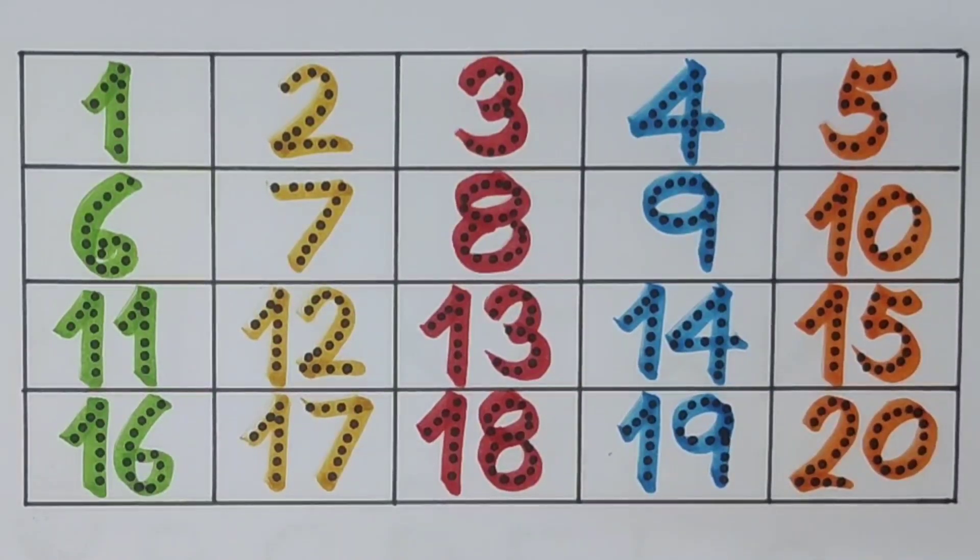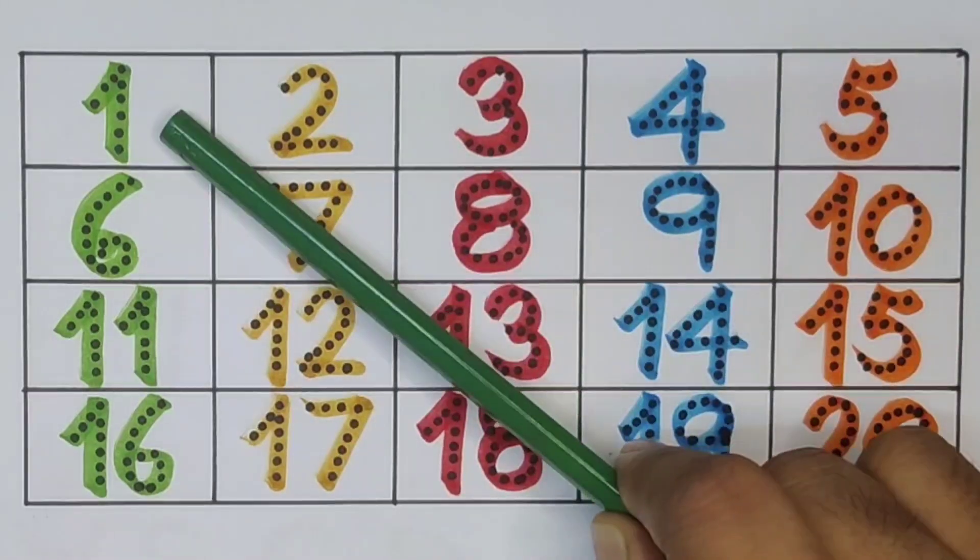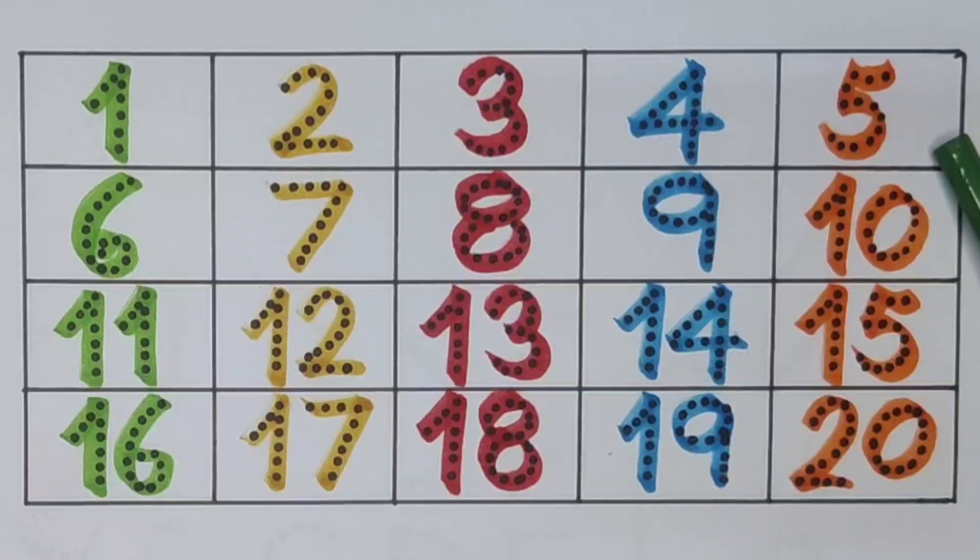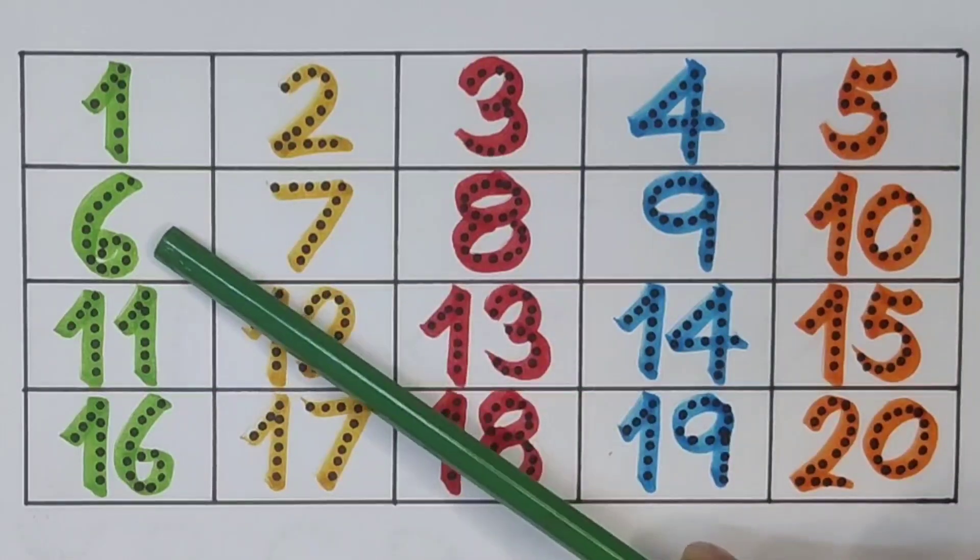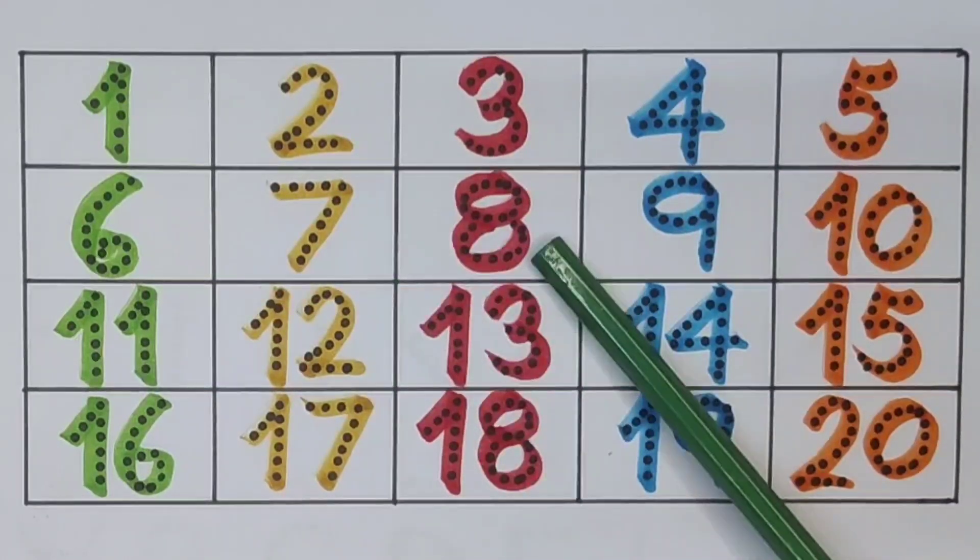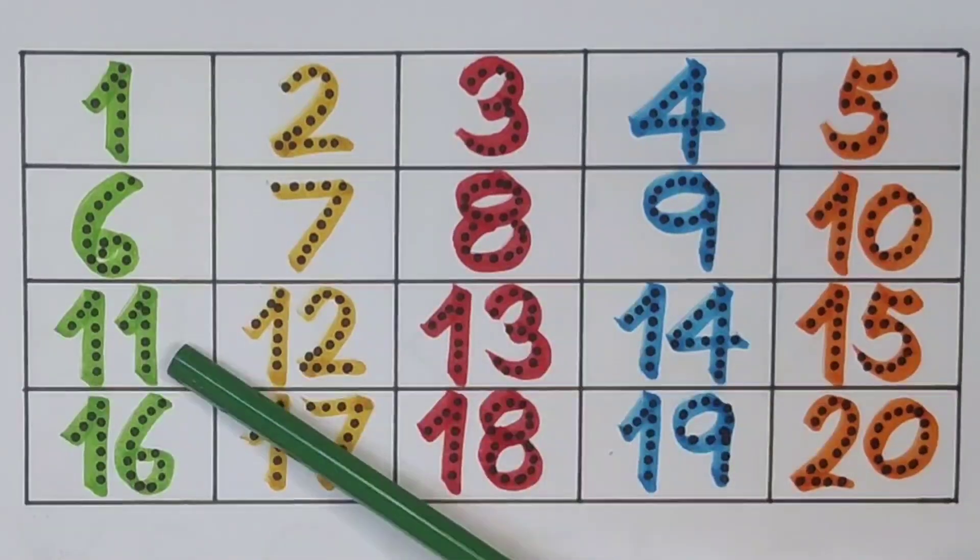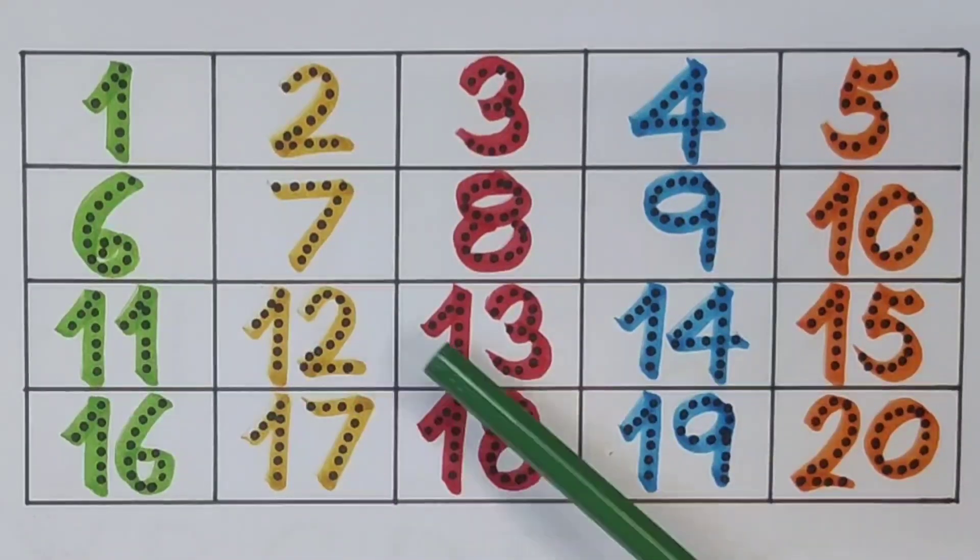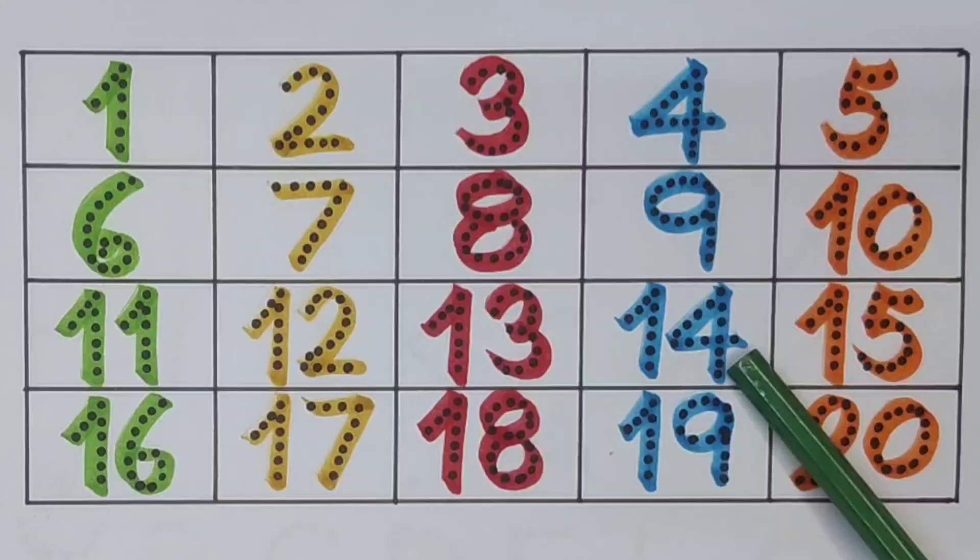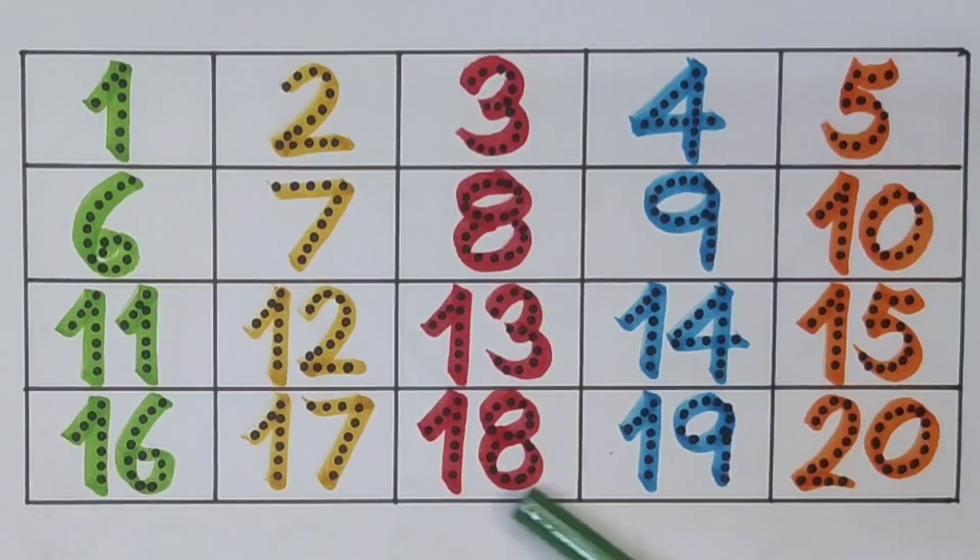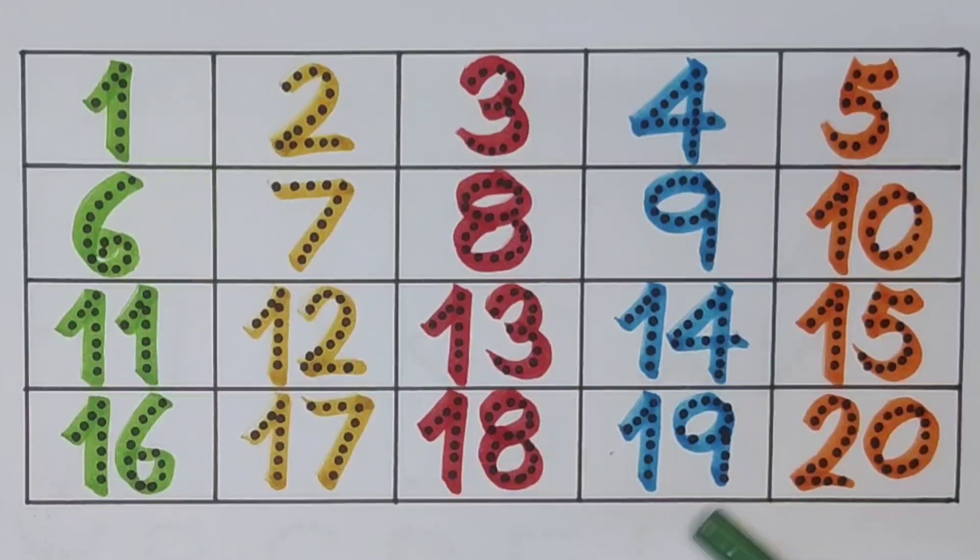What we learned: 1, 2, 3, 4, 5, 6, 7, 8, 9, 10, 11, 12, 13, 14, 15, 16, 17, 18, 19, 20.